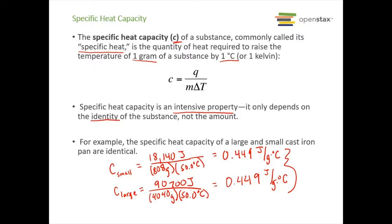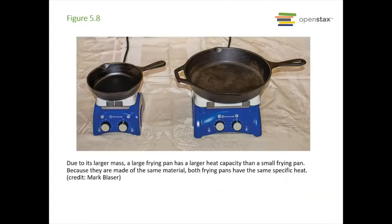This is specific heat capacity. Sometimes you can also see molar heat capacity which has units of joules per mole degree Celsius, where specific heat capacity is joules per gram degree Celsius. You can see very similar and they are both intensive properties. Here's those two cast iron pans on heating plates. They have the same specific heat because they're made of the same material.